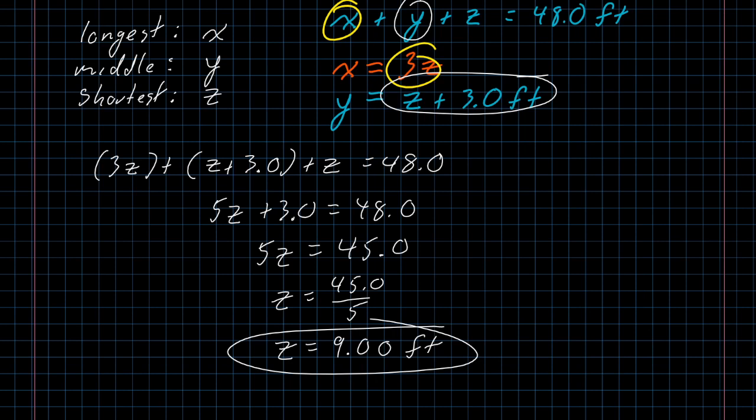All right, that's great to know, but that's not the end of the story, because of course, I have that x is 3z. So if I multiply 3 times 9.00 feet, again, 3 is exact, 9.00 is approximate, so three significant digits, I have that x is 27.0 feet.